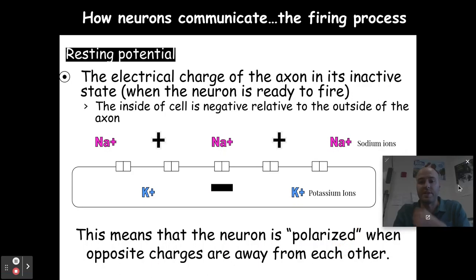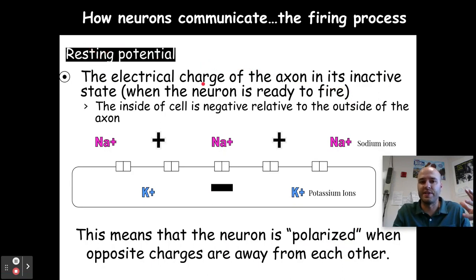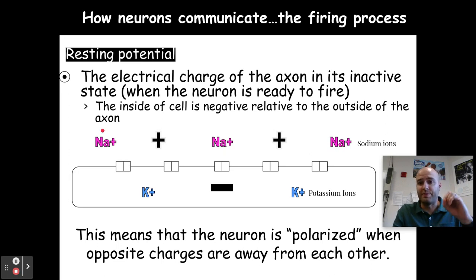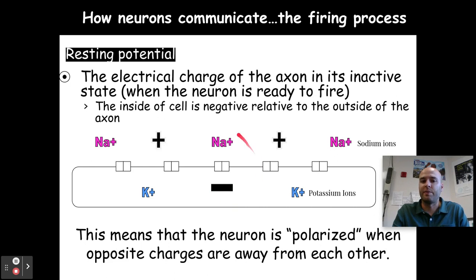There are some pieces to this message sending that neurons do that we need to talk about. When a neuron is in its resting potential, that's the electrical charge of the axon in its inactive state — when the neuron is ready to fire but has not received a message. The inside of the cell is negative relative to the outside of the axon. Inside you have potassium ions, a negatively charged axon, and outside are sodium ions — these are electrolytes. This means the neuron is polarized: negative charge inside, positive charge outside.